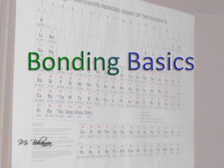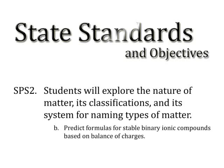Welcome to Bonding Basics with Mr. Bohannon. The Georgia Science Standard that we will discuss is SPS II. This Physical Science Standard deals with the chemistry topic of matter and how it's classified. Specifically, we will be predicting chemical formulas for stable ionic compounds based on balance of charges.